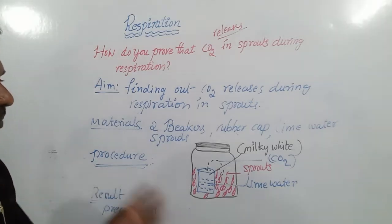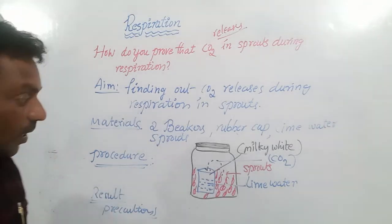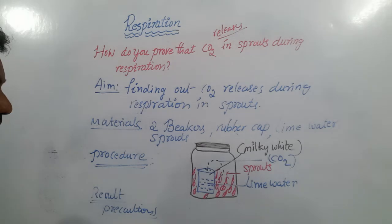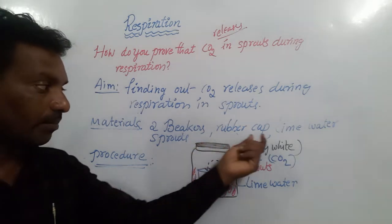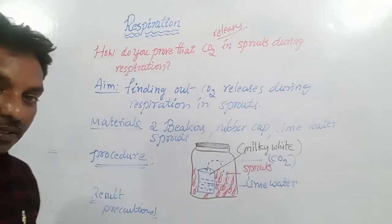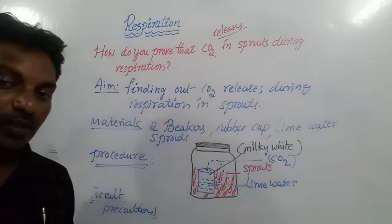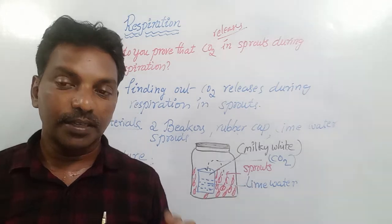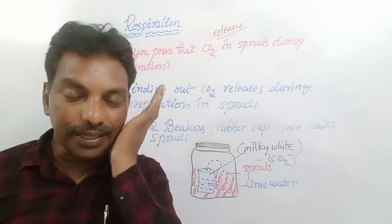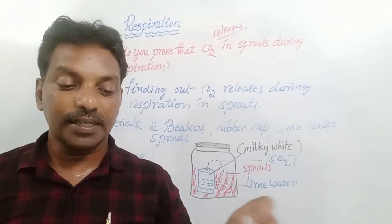Write the common precautions along with the special precautions. The materials are: two beakers, rubber cap, lime water, and sprouted seeds. I think you understood this activity. Next, we are going to discuss the next activity in another video.